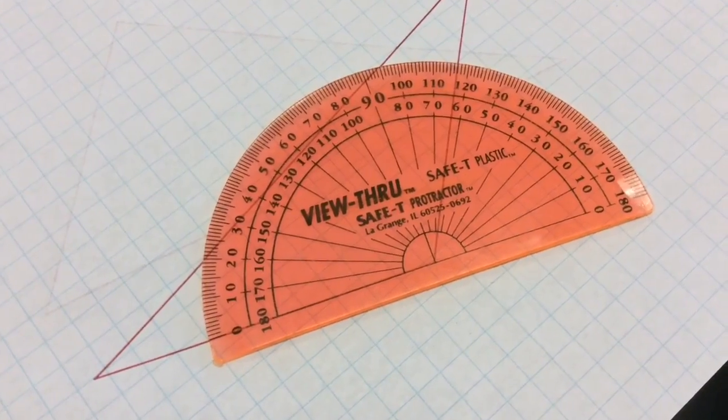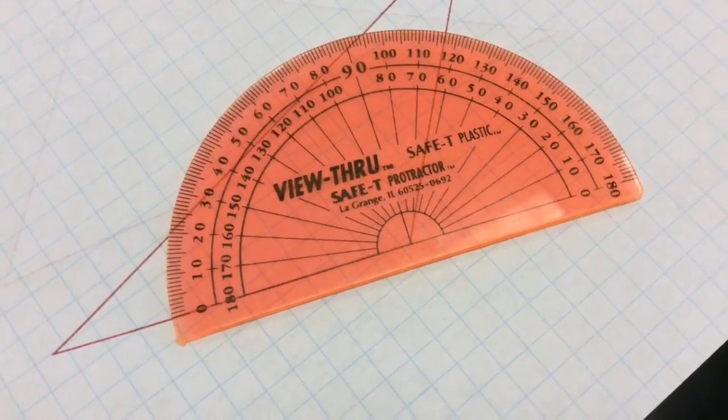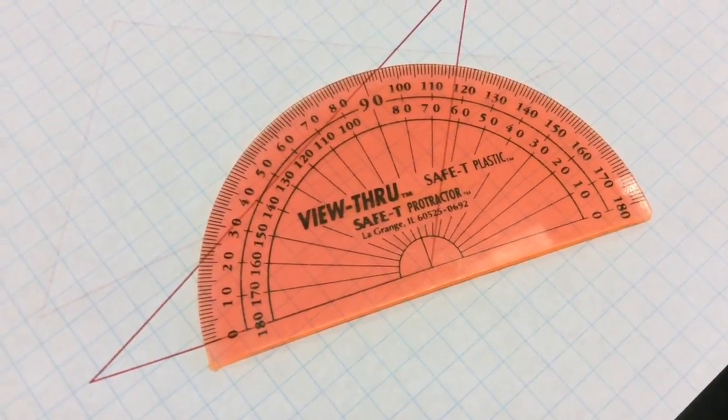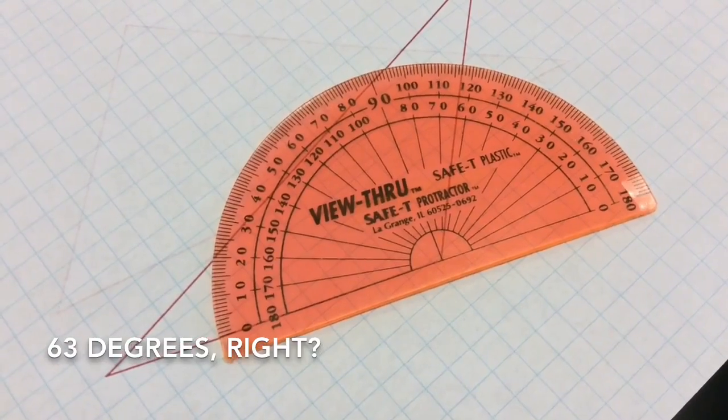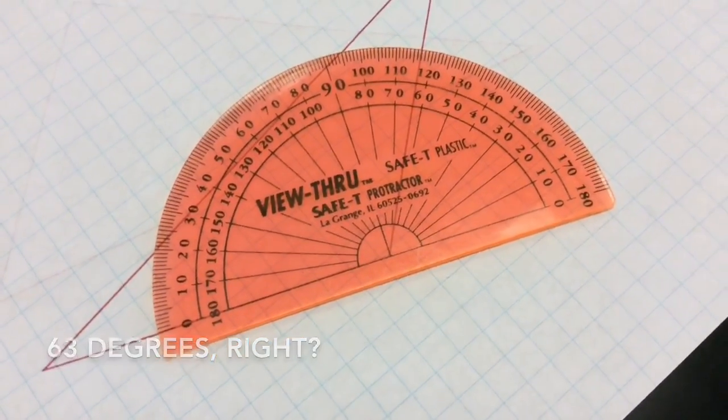Second one. Stop it. Stop the video. Seriously, stop the video now and measure it. 63 degrees, right? That's the measure of the interior angle of that triangle.